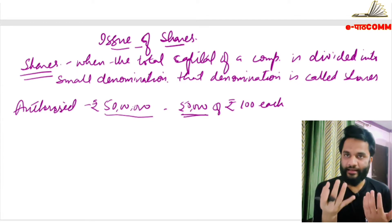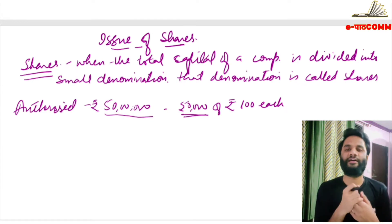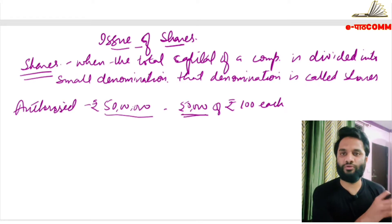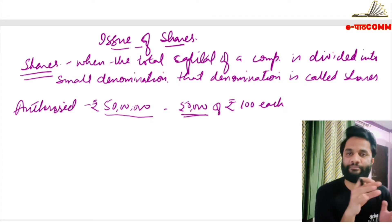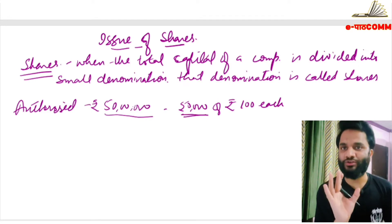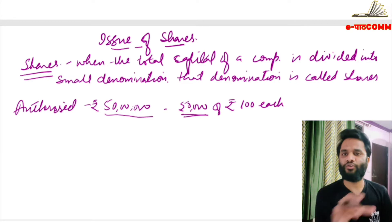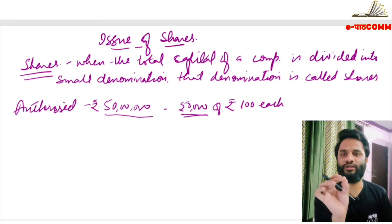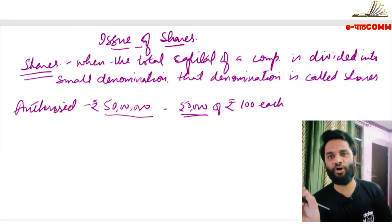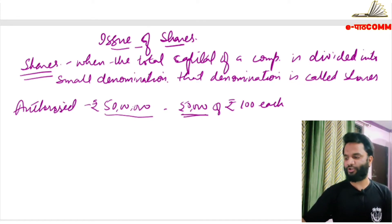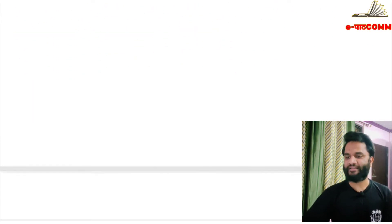Now, a person with 500 rupees can also buy 5 shares, and a person with 1000 rupees can buy 10 shares. So a small investor or common person can purchase the company's shares, invest in them, and contribute to the company's capital. This is the simple concept of shares — when the total capital of a company is divided into small denominations, those small denominations are called shares.